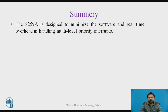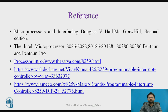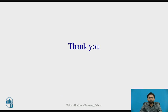In summary, the 8259 is designed to minimize the software and real-time overhead in handling multilevel priority interrupts. The Intel 8259 Programmable Interrupt Controller handles up to 8 vector priority interrupts for the CPU and requires a single plus 5 volt supply. Thank you.